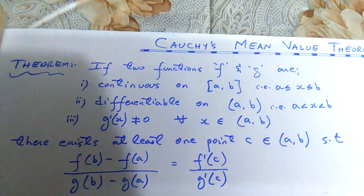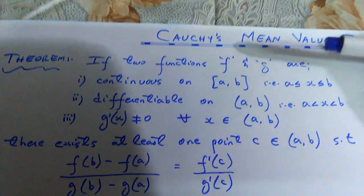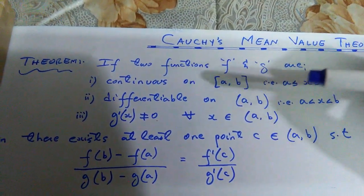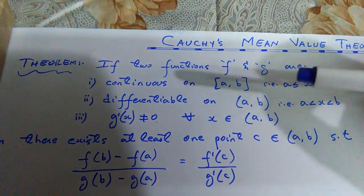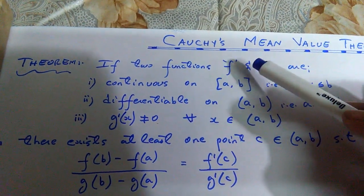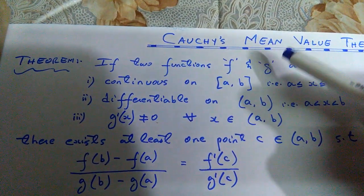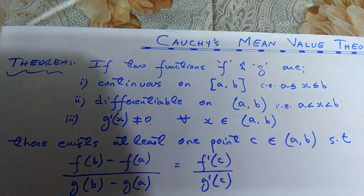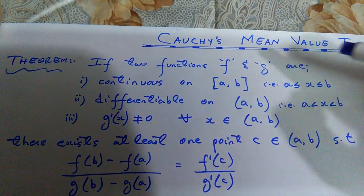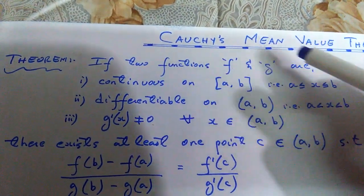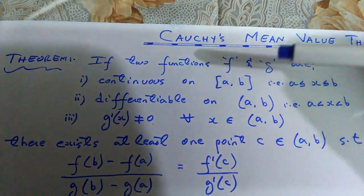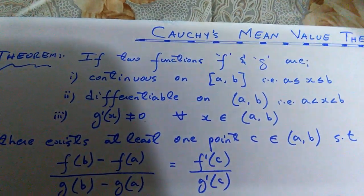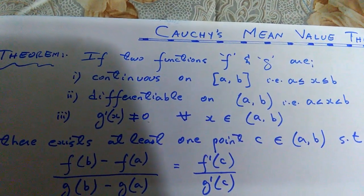So it says that if two functions — and note that we are studying this theorem on the basis of single variable functions — both f and g are single variable functions. The conditions are that if the two functions f and g are continuous on a closed interval [a, b], where a and b are any real numbers.